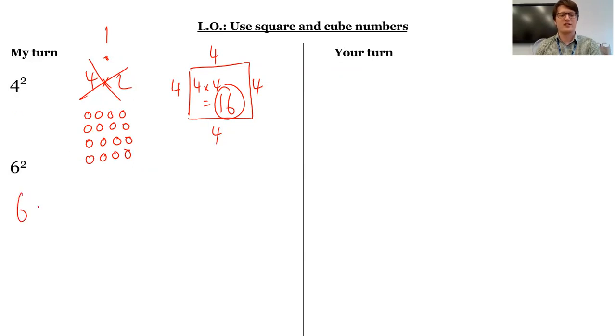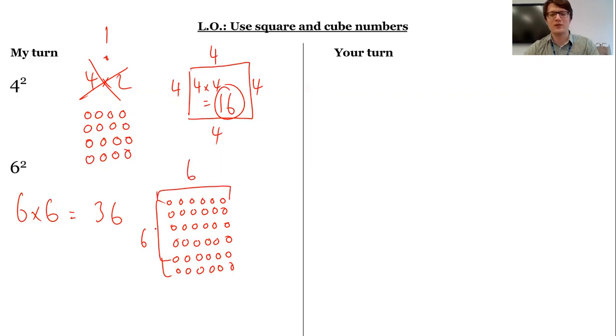Six squared then is six times six, six times itself, which is 36. And again, I can make a square because I'll have six rows of six. So I've got six here, all the way down, and six across. So I've got a square made out of six.